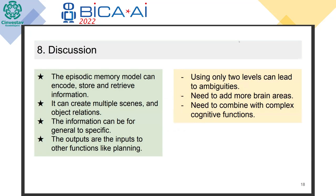With these results, we are able to confirm that we have an episodic memory model that can encode, store, retrieve, and forget. It can create multiple scenes and object relationships. Information can be general or specific, and the outputs can be used for other functions like planning. We also notice that because we are using only two layers we have ambiguity, so we need to identify more primitives that will help create more specific information to reduce that ambiguity. We need to combine this with more complex functions like decision making, attention, and motivation.